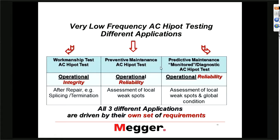I can do a preventive maintenance test. In contrast to operational integrity, it gives operational reliability information because if it passes the test as prescribed in 400.2, it's typically an indication that the aging condition is at a level that allows me to operate this cable for another three or four years before I should retest it. So this is preventive. Now we can go to the predictive maintenance test, which is a monitored or diagnostic type test, giving me insight about the operational reliability of the cable.